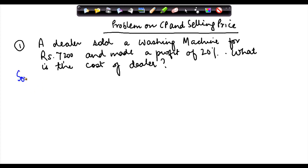We have a question here that there is a dealer who bought a washing machine at a particular price which is the cost price or the purchase price of the dealer. And the dealer sold it at a price of Rs.7200. So selling price is Rs.7200 and made a profit of 20%.